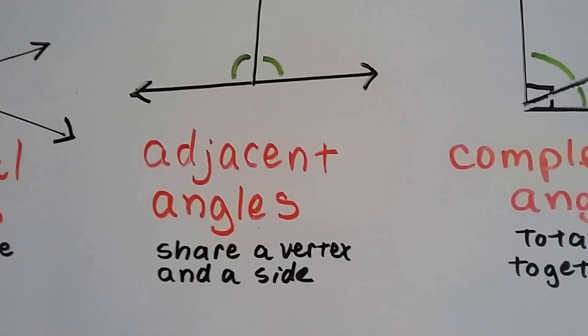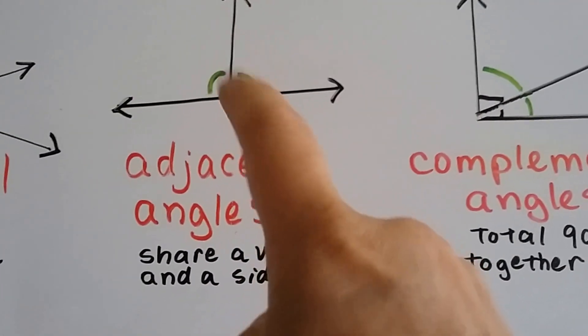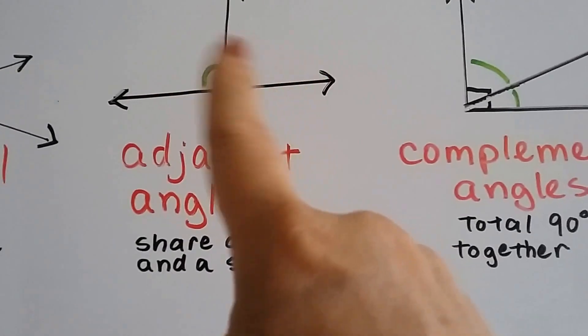Adjacent angles share a vertex and a side. They share this vertex, and they share this side right here, so these are two adjacent angles.